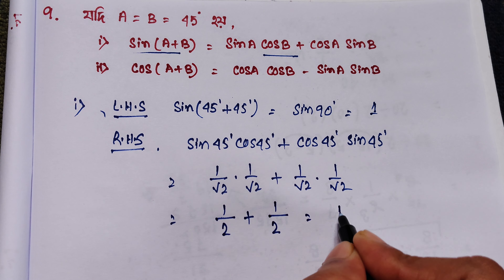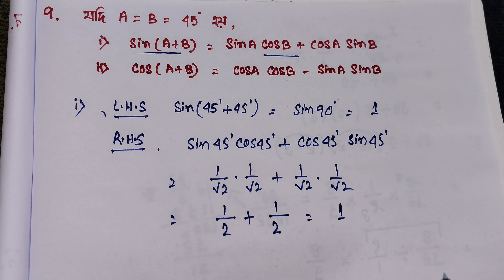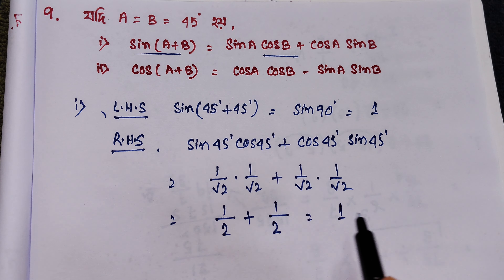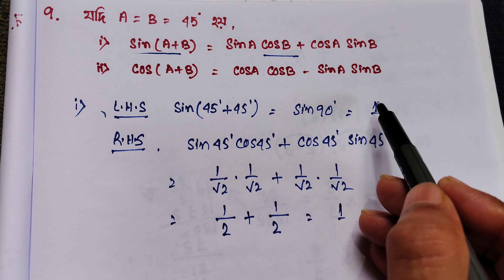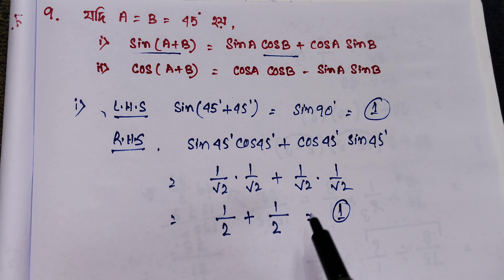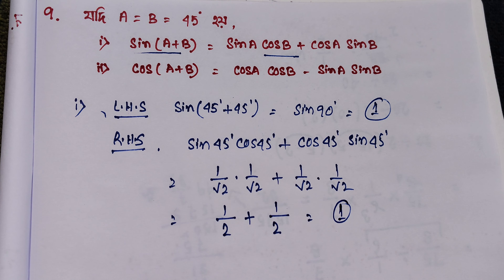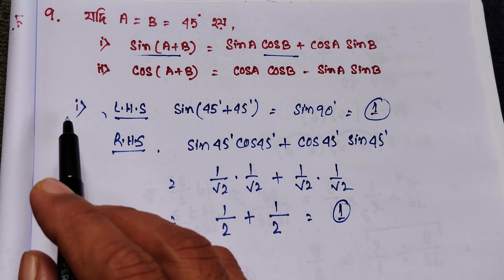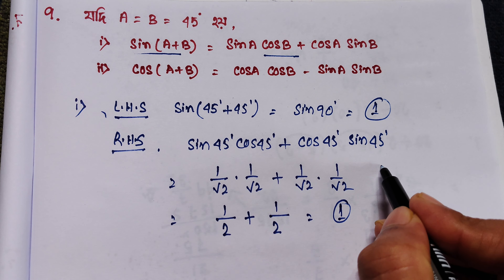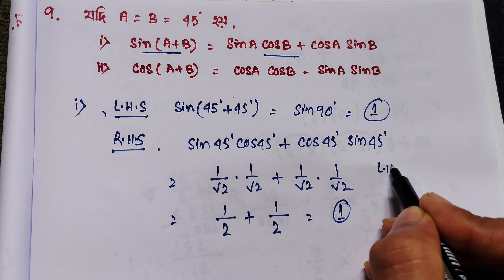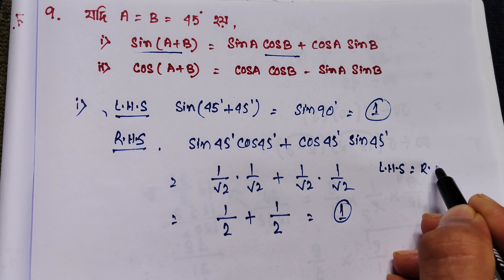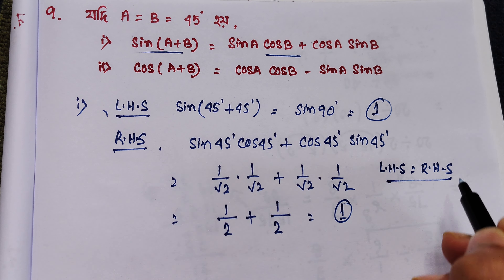Half plus half equals 1. So the left hand side is equal to the right hand side. Hence the formula for sin of a plus b is verified.